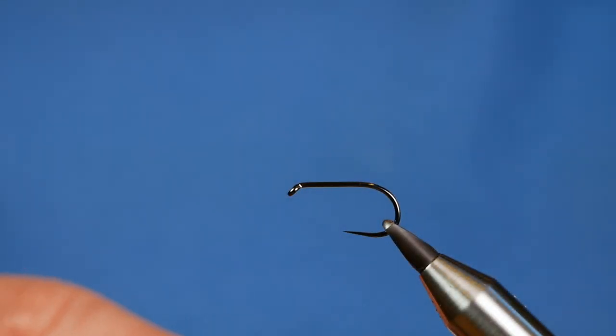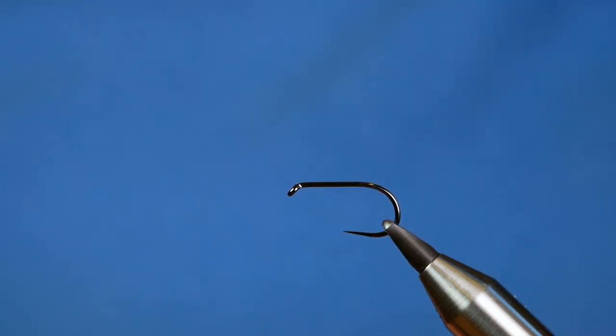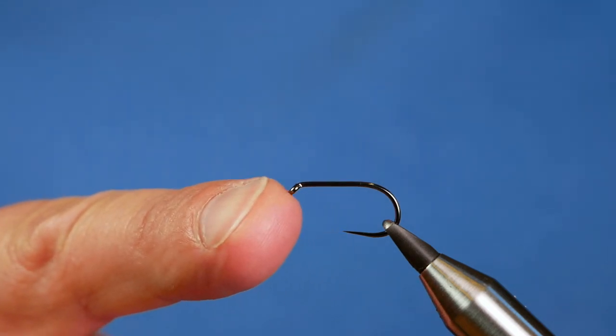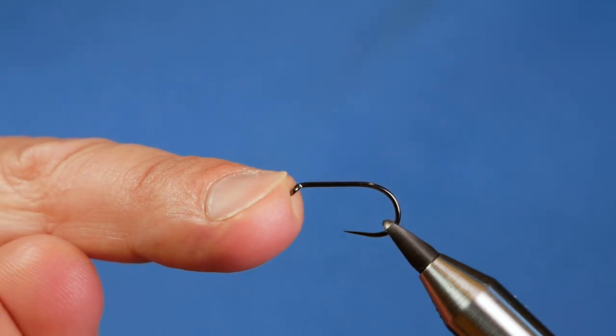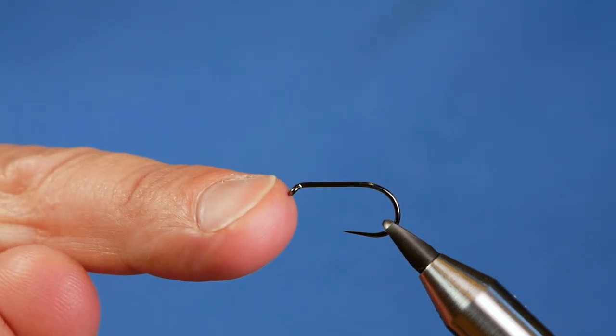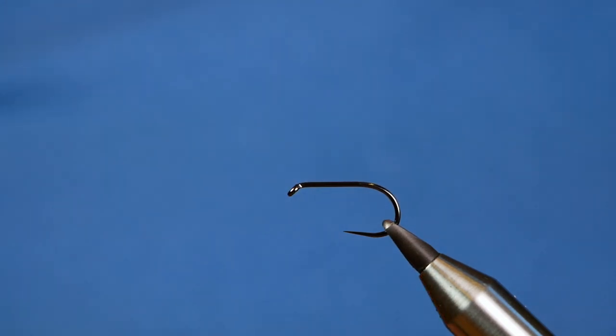In the vise then is a Hanak H260 barbless hook. This one's at size 8. It's a heavy wire hook in black nickel. Now the 260 at size 8 actually fits in the competition gauge. So if you're going to do international rules competitions, this hook's absolutely fine.